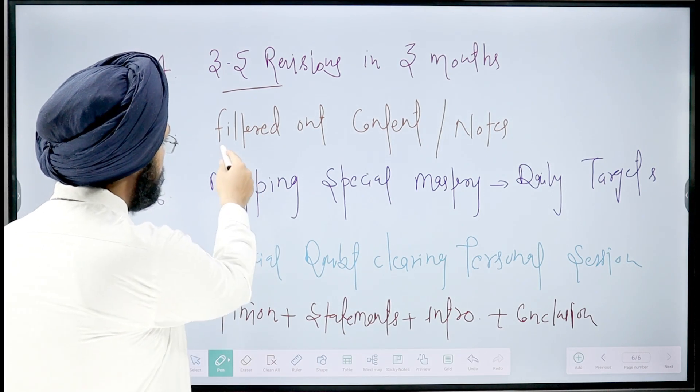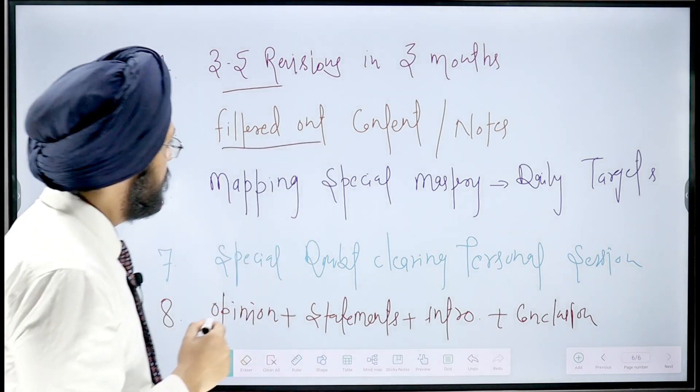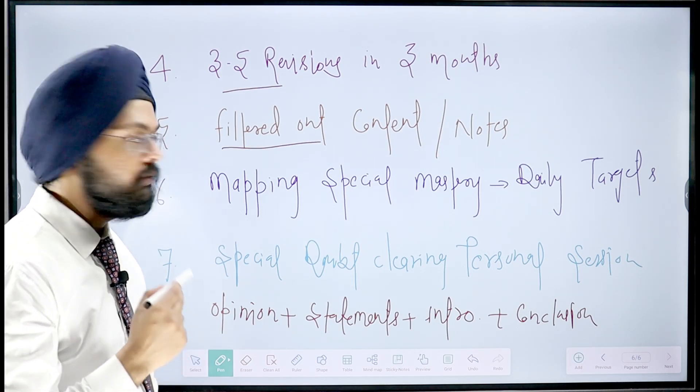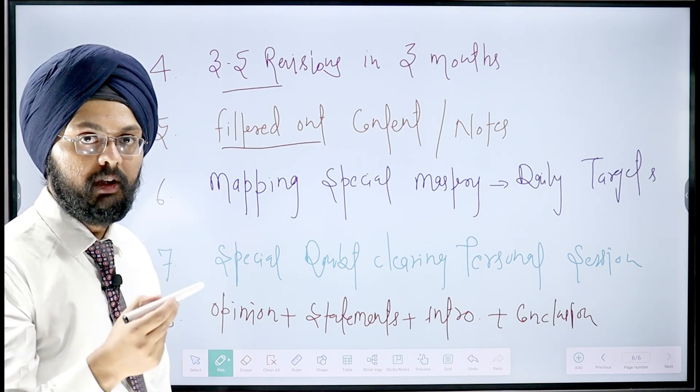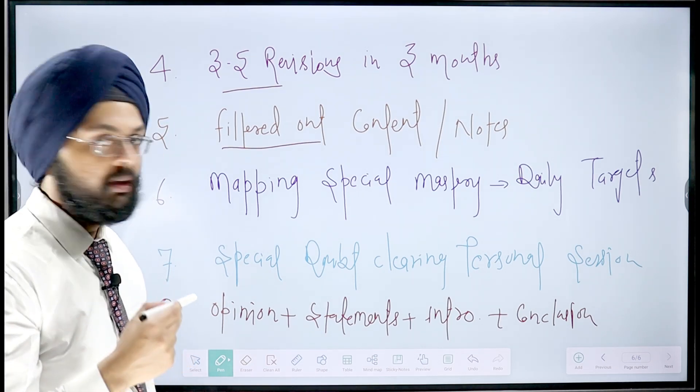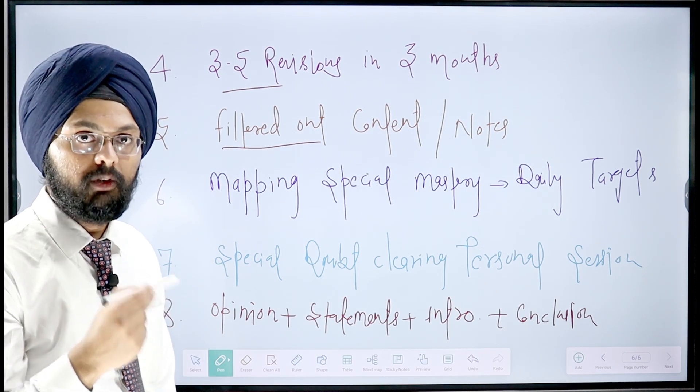Another important aspect is filtered out content. Friends, history optional has a variety of sources and books, but you need certain filtered out content to better reproduce in your exam. Earlier in my first attempt, I used to follow various books, but in the exam I was not able to produce enough good content. So sir's approach is very good in this respect.